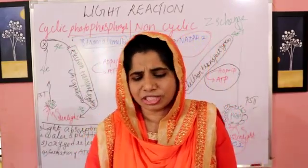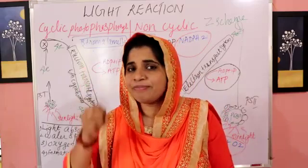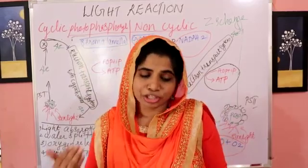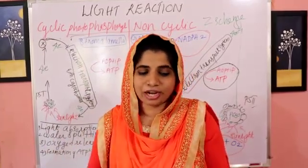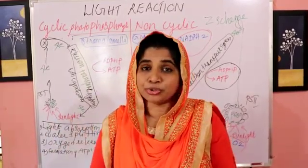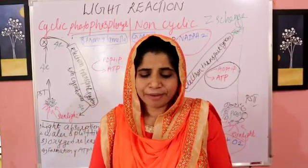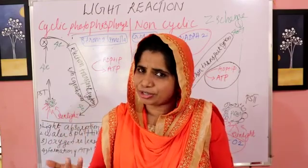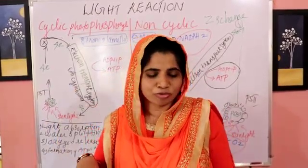Now we have questions. What is light reaction? Light reaction occurs in the thylakoids. What are its end products? NADPH2, ATP, oxygen, and water — these are the end products. Light reaction is also called photophosphorylation — phosphorylation in the presence of light.